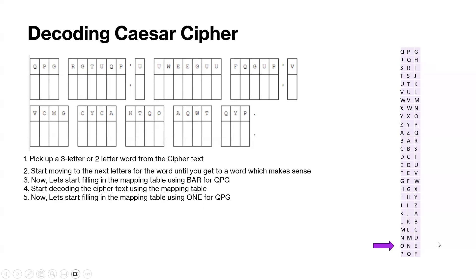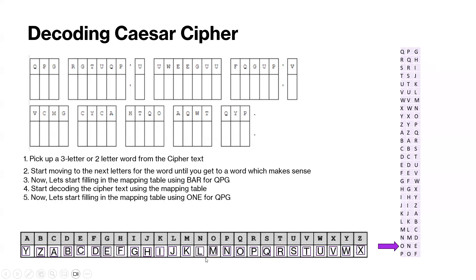Let's focus on one. Let's fill in the mapping table and put one into here. Persons. r is p, g is e, t is r, u is s, q is o, p is n, and u is s.